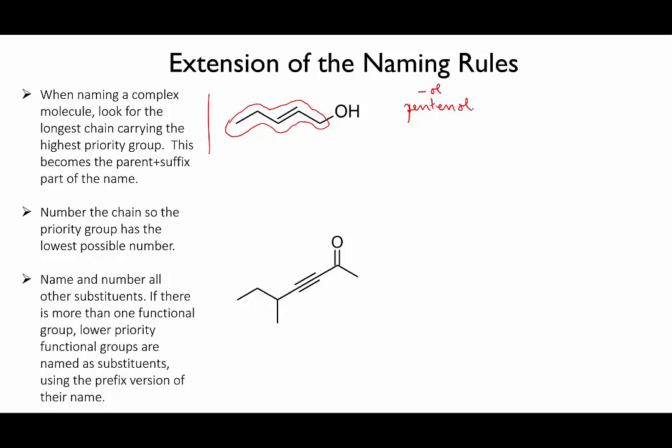However, we need to put in some numbers to say where the OH and the double bond are. So we number from the alcohol end, and that gives us pent-2-ene-1-ol.